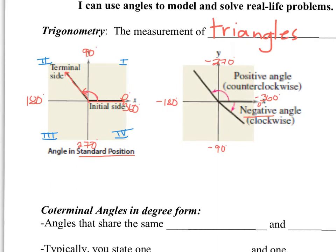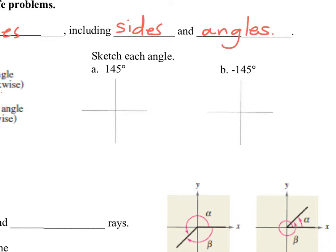On the right, you're asked to sketch two different angle measures: positive 145 and negative 145. To graph positive 145, place the vertex at the center and the initial ray on the right x-axis — that's your zero start location. A 145-degree angle goes counter-clockwise, past 90 and somewhere into quadrant 2. Our terminal ray ends over here to the left, and that would be your angle measure.